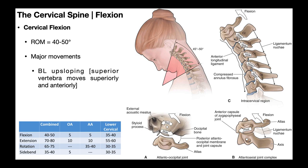We can also talk about the zygapophyseal or facet joints, as they're often called. We have a facet joint on each side at each level — that means two at each level, one on the left and one on the right. Bilaterally during cervical flexion, all the facet joints are going to undergo what's called upsloping.